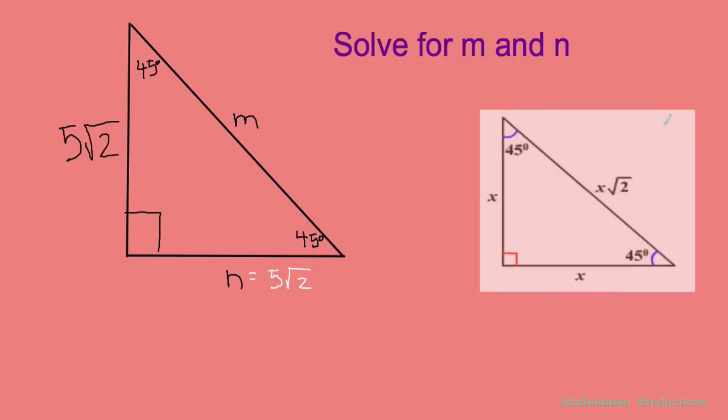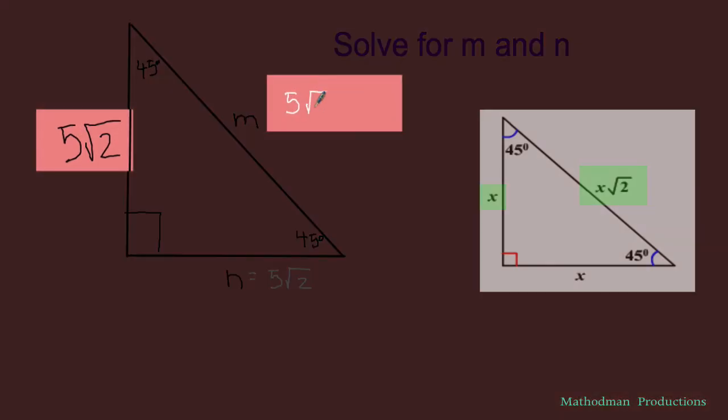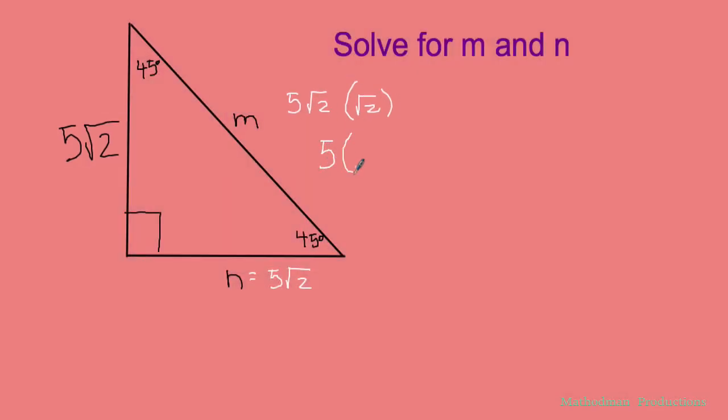Looking at this relationship once again, m is just whatever the leg is times square root of 2. So we can take that and substitute whatever the leg is times another square root of 2. If I were to multiply that out, the square roots cancel each other out. So this just turns into 5 times 2, which is 10.